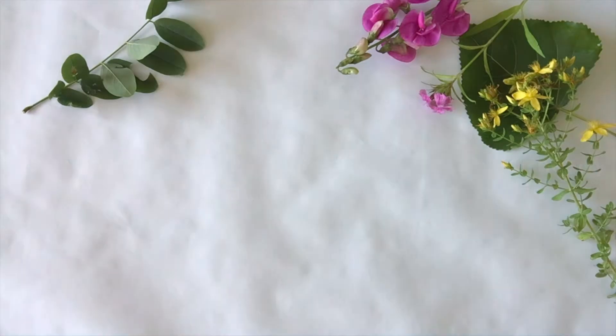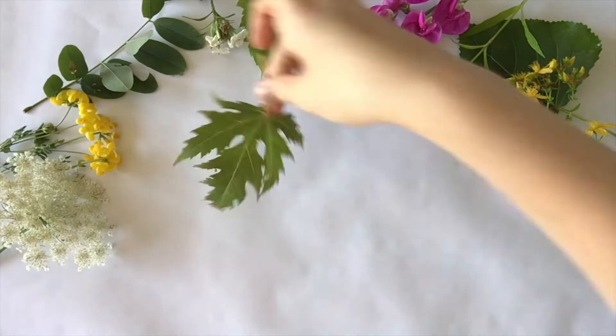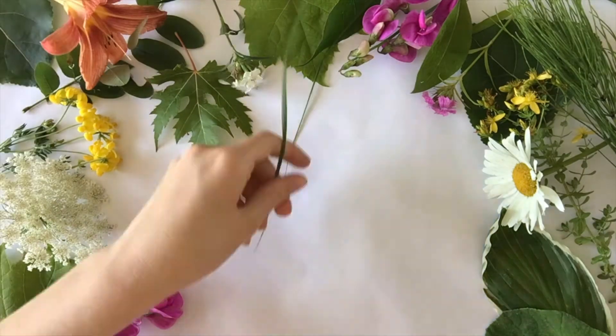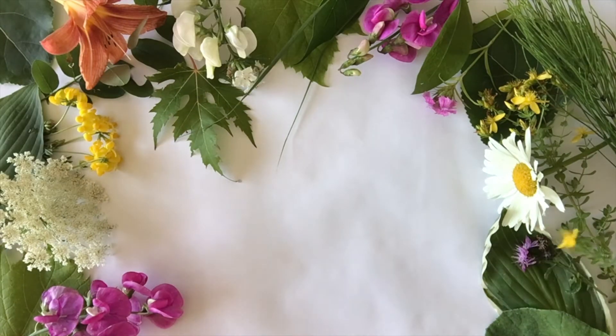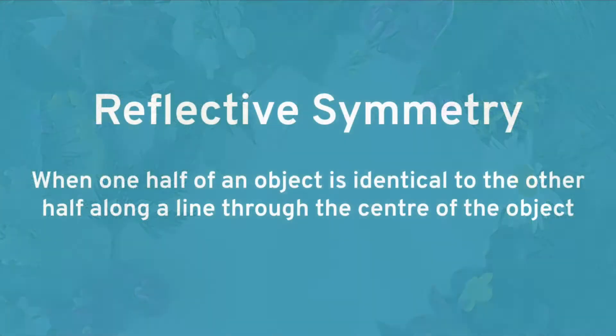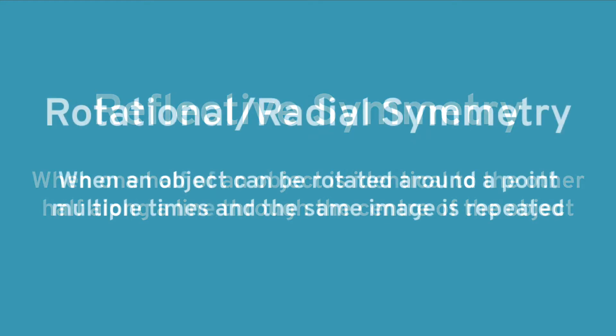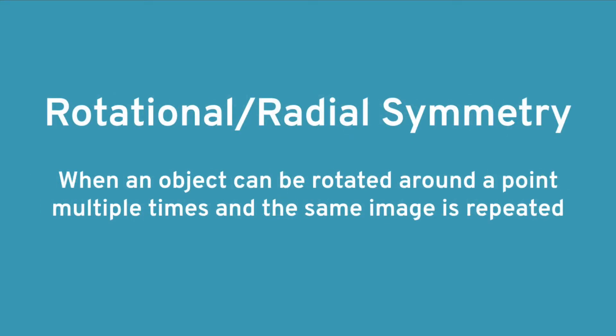You start to collect leaves, grasses, pine cones, flowers, and anything else interesting that you think might be symmetrical. There are two types of symmetry: reflective symmetry, which is when one half of an object is identical to the other half along a line through the centre of the object, and rotational symmetry, which can also be called radial symmetry, which is when you can rotate an object around a point multiple times and see the same image repeated.